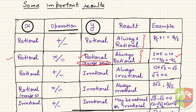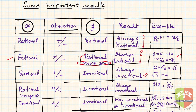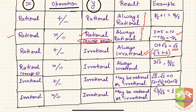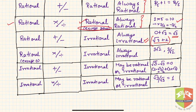Third: rational plus or minus an irrational number will always be irrational. You will never get a rational number if you add or subtract an irrational from a rational. For example, 0 + √3 gives √3, and √3 + 2 is a sum of irrational and rational, which is an irrational number.